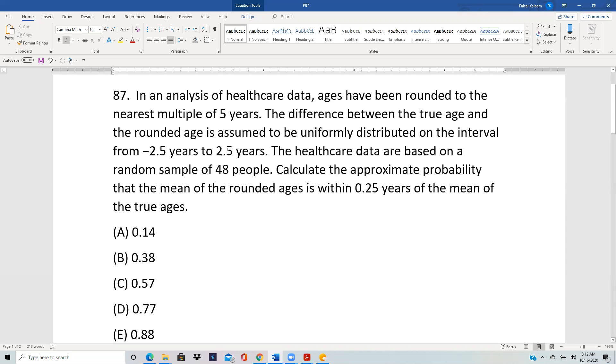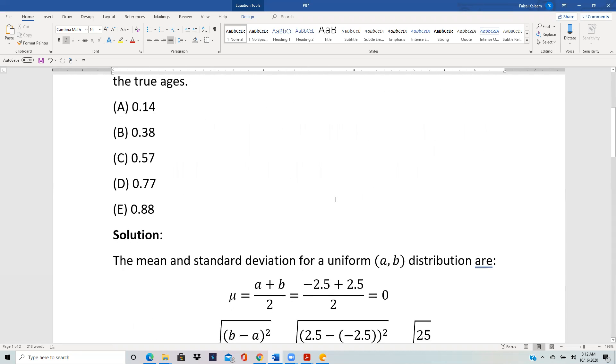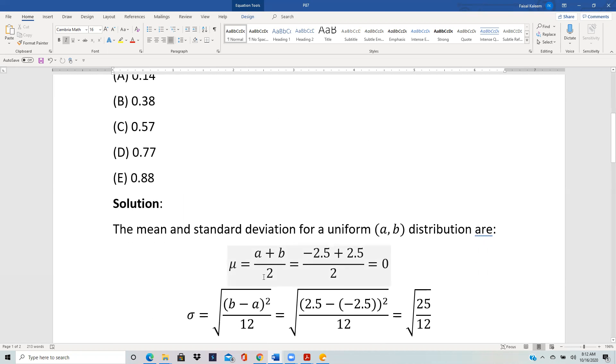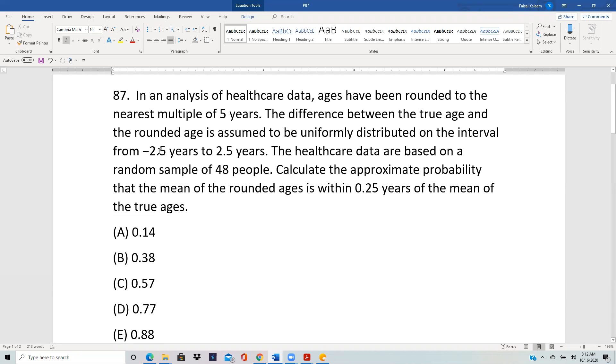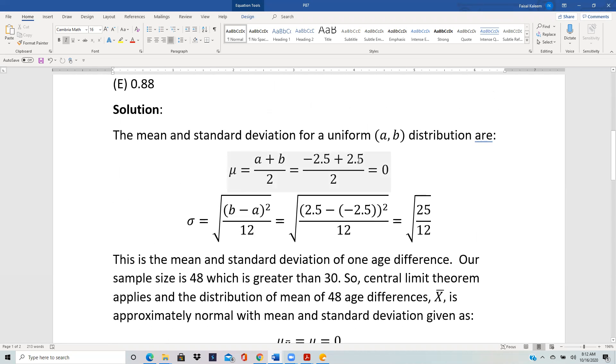For the uniform distribution, we can remember that the mean is (A + B)/2. In this case, it's from negative 2.5 to 2.5, so (-2.5 + 2.5)/2 = 0. The standard deviation is √[(B - A)²/12], which equals √(25/12).